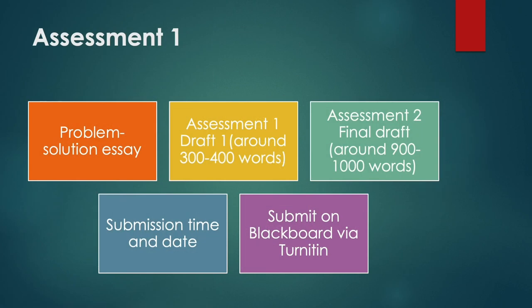Some reminders: Assessment 1 is a problem-solution essay. For draft 1, you have to write between 300 and 400 words, while for the final draft — Assessment 2 — you have to write around 900 to 1000 words. Please check Blackboard for the due date, or ask your teacher. Remember, you need to submit the assessments on Blackboard via Turnitin.